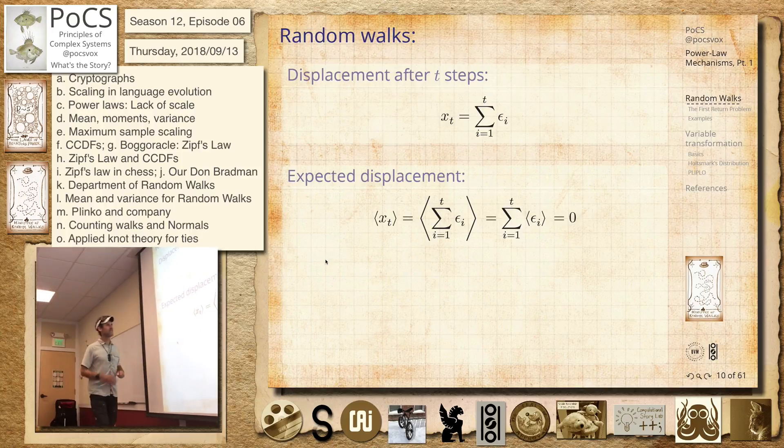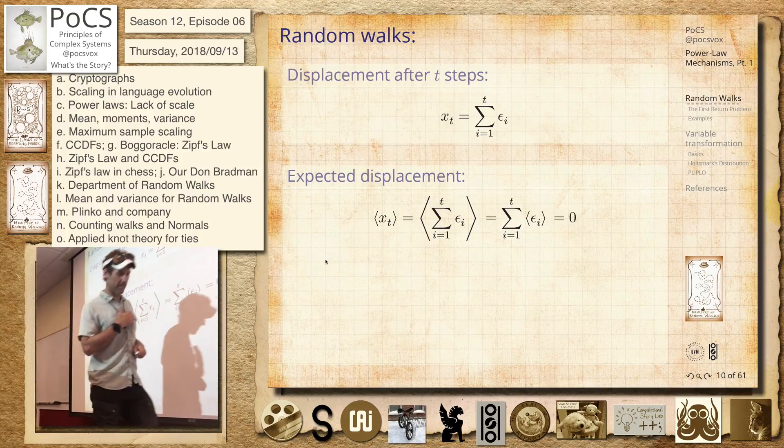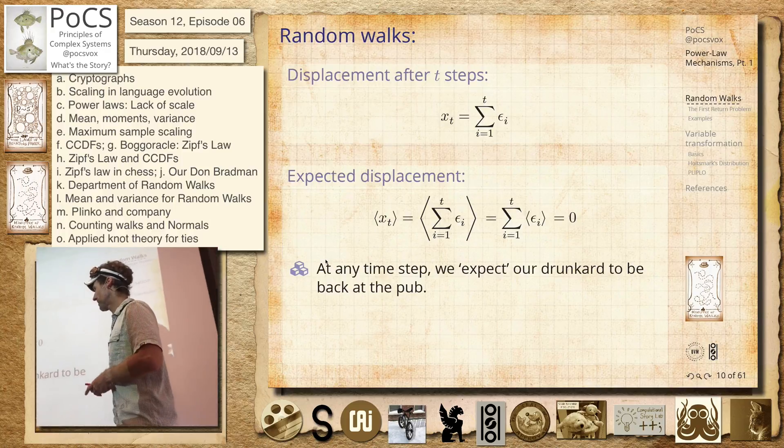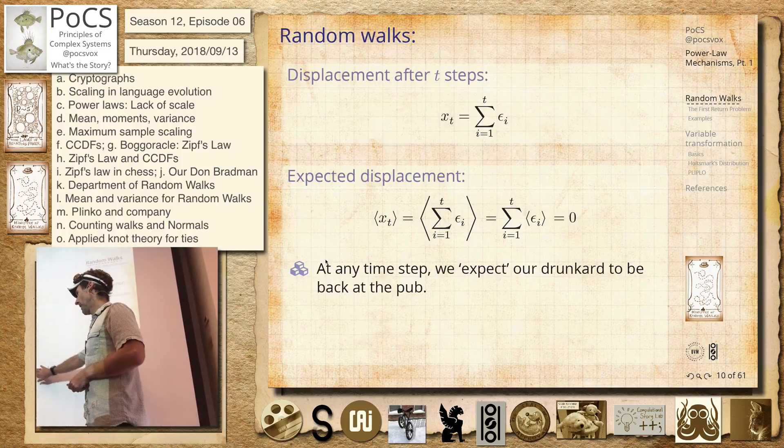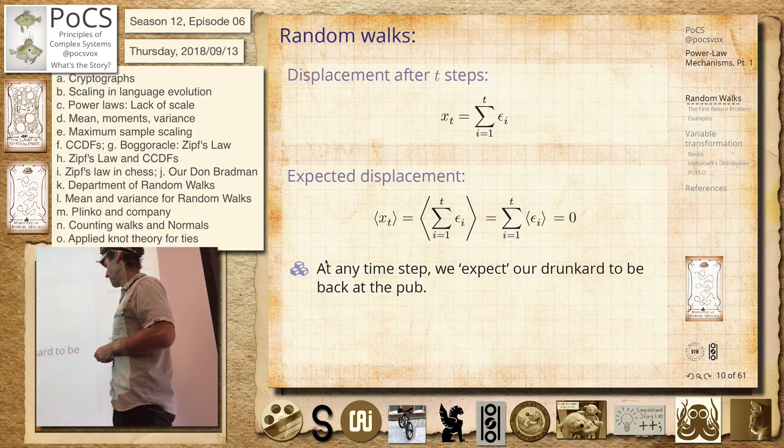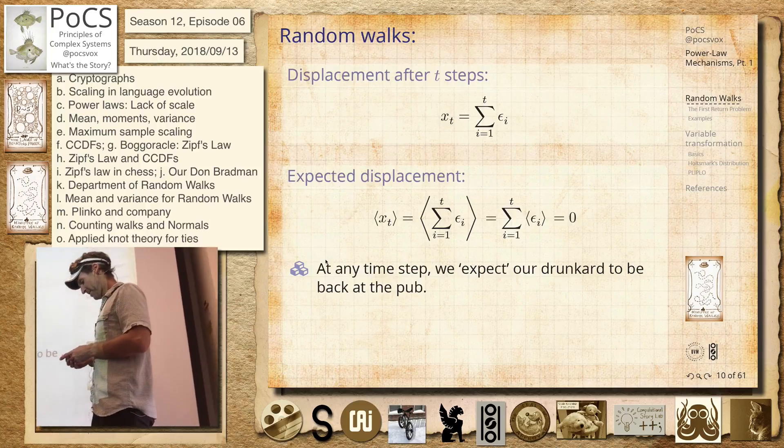Is that okay? Yeah. Nowhere, right? They have a characteristic width, though. There's a standard deviation. So we'll get to that. So anyway, we expect our texter, we'll call it a texter, to be back where they started.